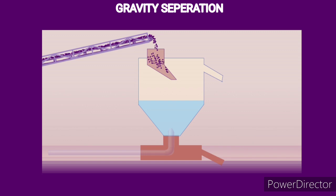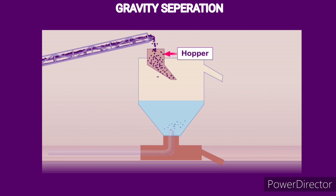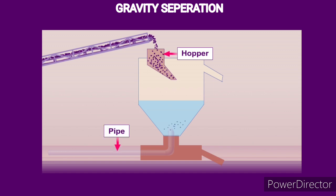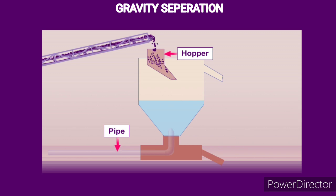The Hydraulic Classifier Method: A Hydraulic Classifier is a conical reservoir having a hopper at the top and a pipe at the bottom. Finely divided ore particles are dropped into the hopper, and a powerful current of water is introduced through the pipe at the bottom.